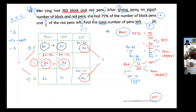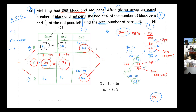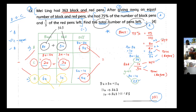11 units equals 363, so 1 unit equals 363 divided by 11, which is 33. The total number of pens left is the after: 6 units plus 1 unit equals 7 units. 7 units equals 33 times 7, which equals 231. Done.